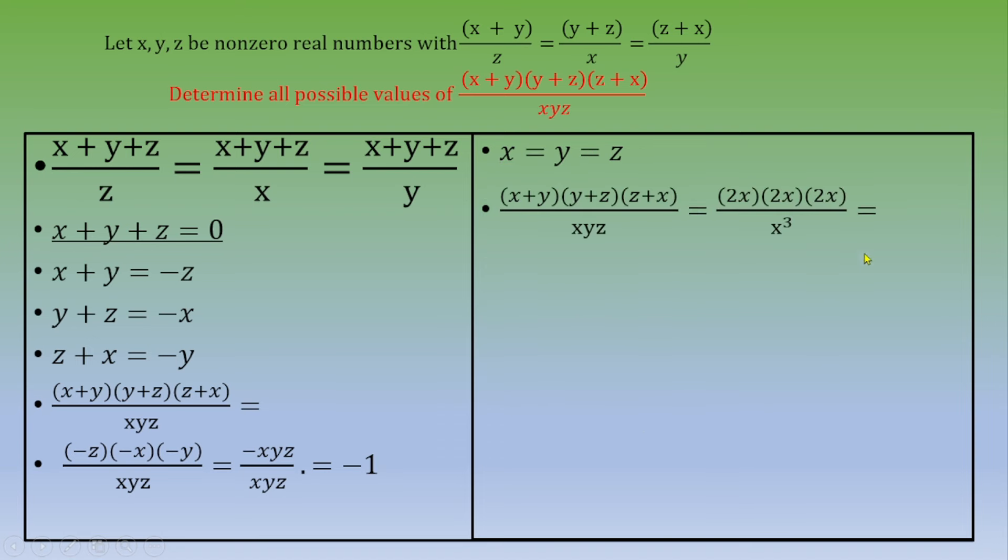Now we can express each sum in terms of x. We have x+y = 2x, y+z = 2x, and z+x = 2x. Multiplying these three terms, we get 8x³ over x³, which equals eight.